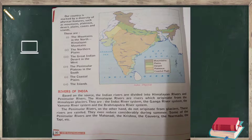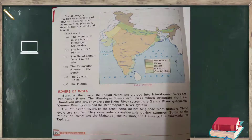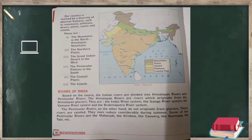As you can see on the map, mountains are marked in brown, plains in dark green, desert in yellow, plateaus in light brown or orange, and coastal plains in light green. Based on the source of water, Indian rivers are divided into two types: Himalayan rivers and Peninsular rivers.